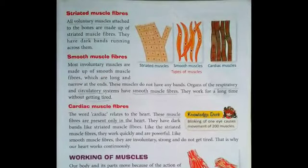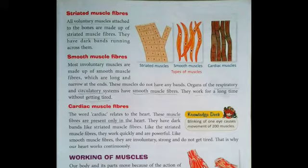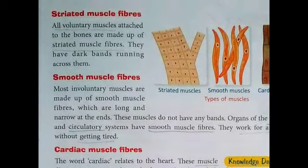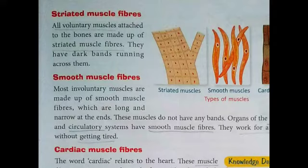You can see the diagram showing the three types of muscles: striated muscles, smooth muscles, and cardiac muscles. All voluntary muscles attached to the bones are made up of striated muscle fibers. They have dark bands running across them, as you can see in this picture. Examples of voluntary muscles are arms and legs, and they are made up of striated muscle fibers.